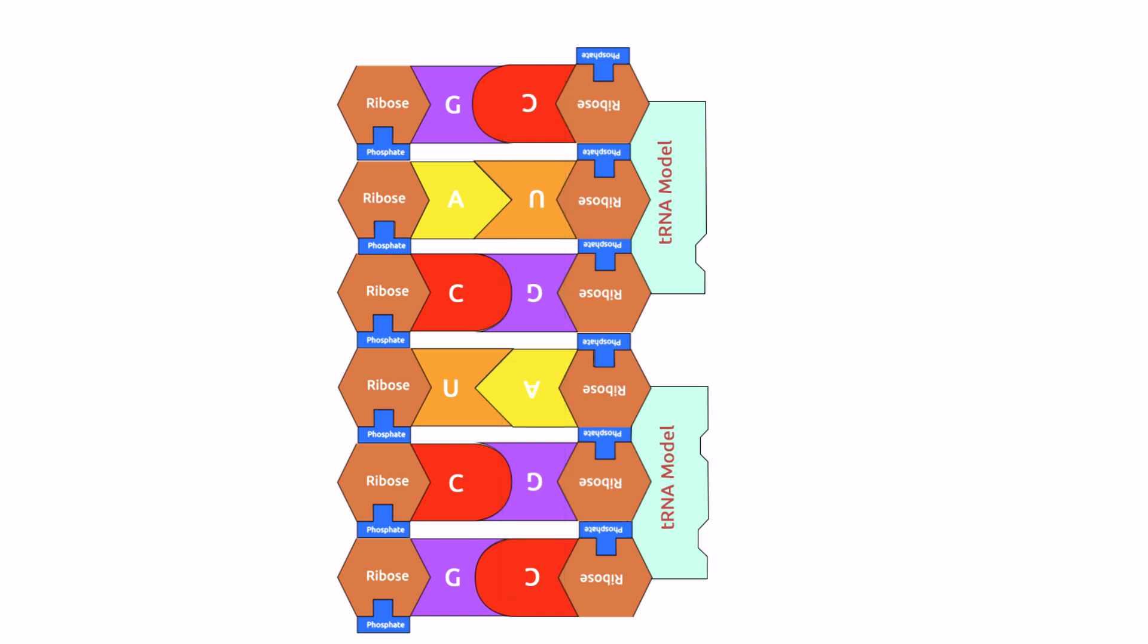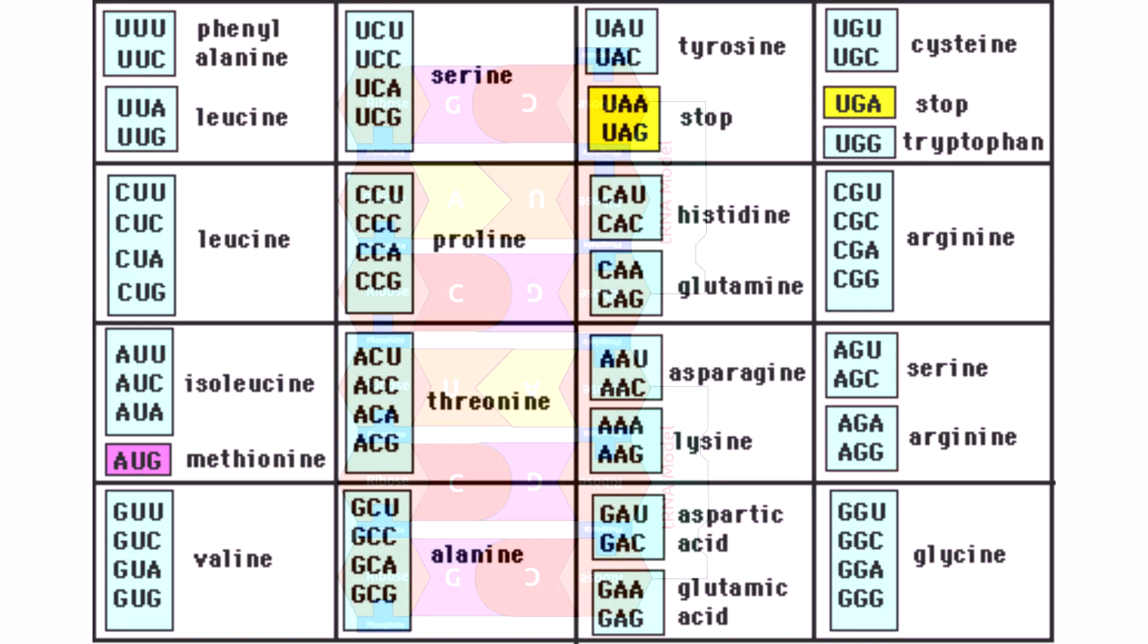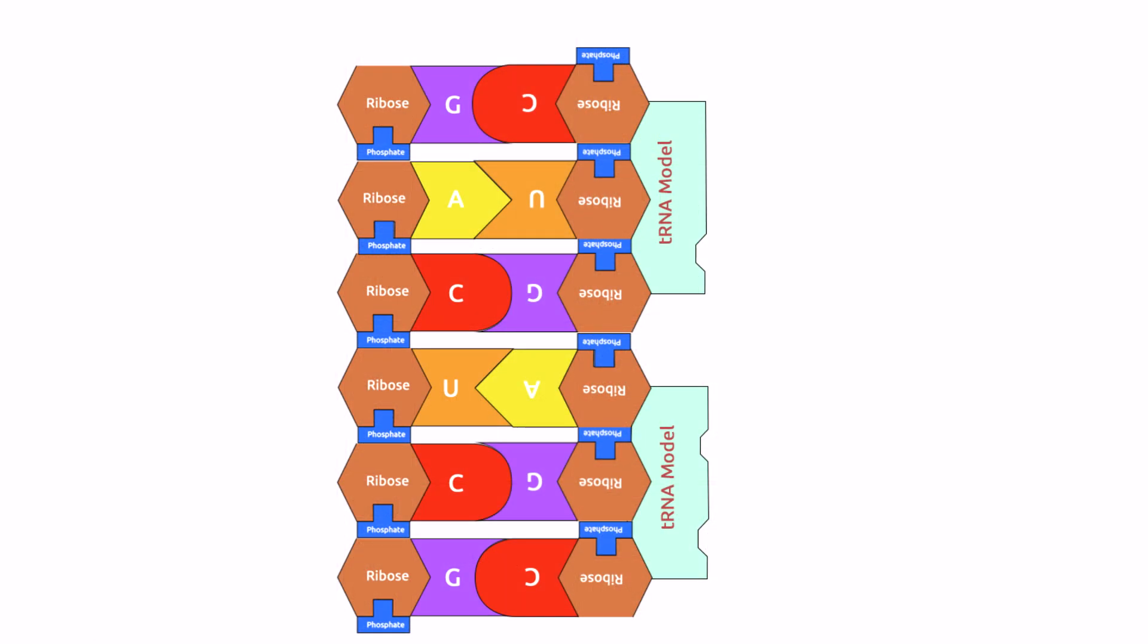Now, how do we know the name of the amino acid produced in this translation process? We will use the genetic code table. So please take note that it is not the tRNA that codes or copy the information from the DNA. To get the name of the amino acid, you will use the codon.